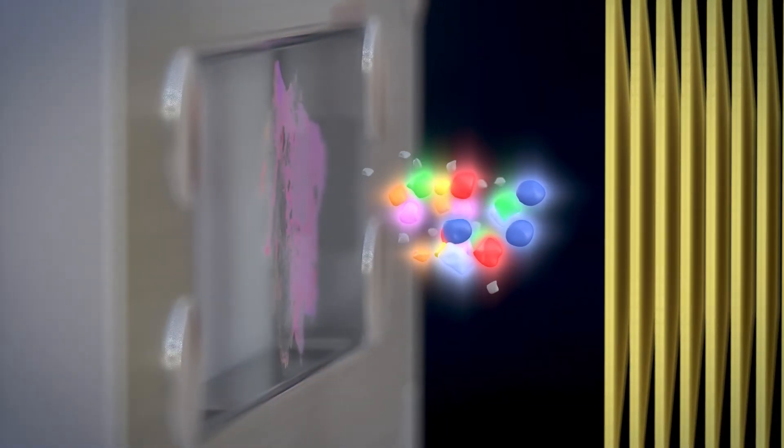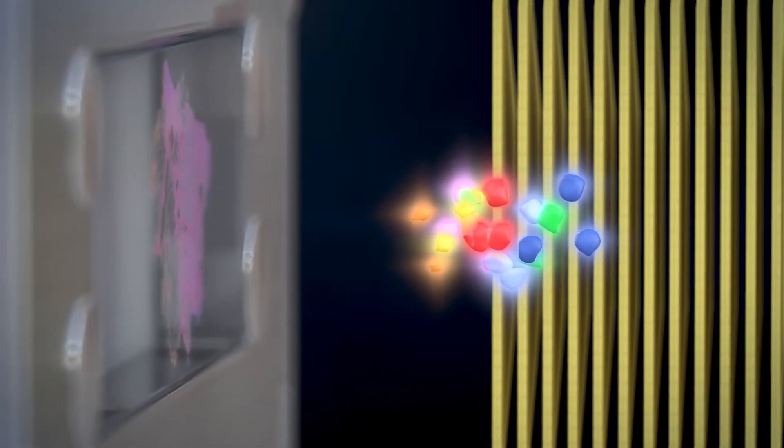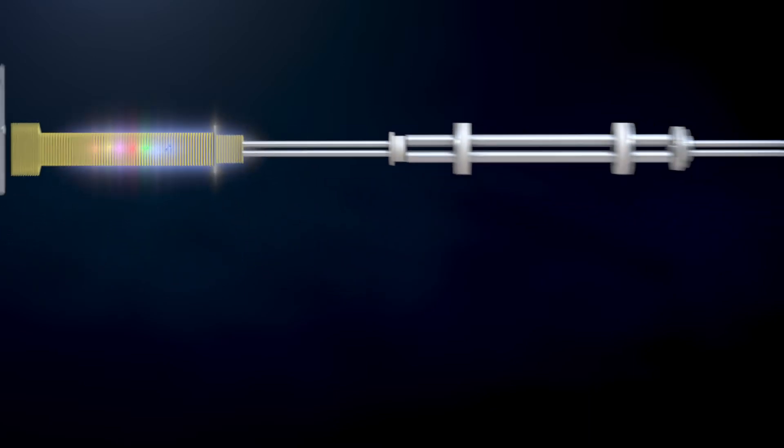MALDI-2 utilizes a second orthogonal laser beam to interact with the material desorbed from the first laser pulse, which post ionizes neutral matrix, allowing a charge transfer from post ionized matrix to analyte.